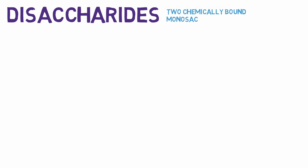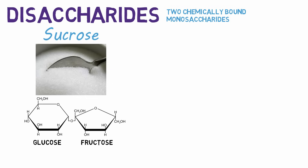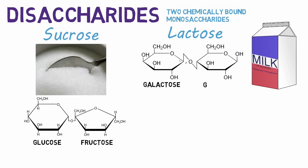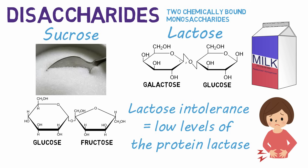You are probably familiar with some disaccharides, which are two monosaccharides chemically bound together. Examples include sucrose, which is common table sugar formed from glucose and fructose, and lactose, the sweetener in milk formed from galactose and glucose. People who are lactose intolerant have low levels of the protein lactase, which breaks down lactose, and if they can't break down lactose, then the stomach will get pretty upset.